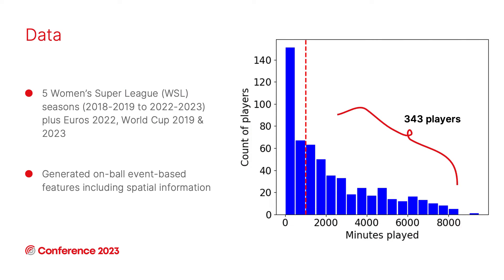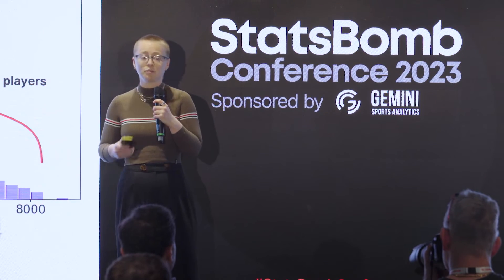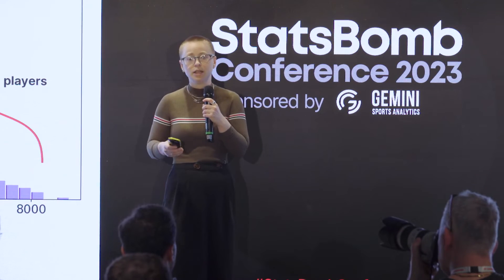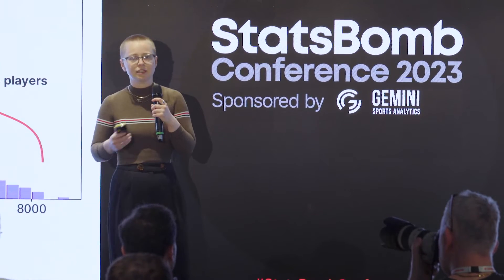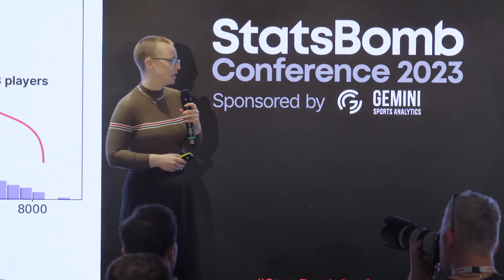The data we use is five seasons' worth of WSL data provided by StatsBomb — the event data that's freely available online. From this data we generated our own features and added spatial components by splitting the pitch into a coarse grid. For example, if we count the number of passes for each player, we can count passes completed in the widest third, or shots taken inside and outside the box, giving a spatial component to the data.